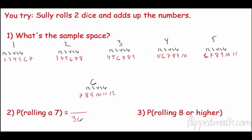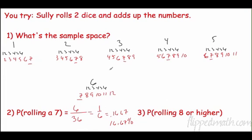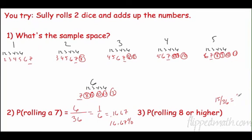What is the probability of rolling a sum of seven? Counting the outcomes that total seven: there are six of them. So six out of 36 reduces to one out of six — 0.1667, or 16.67%. For rolling an eight or higher, counting those outcomes gives 15 out of 36, which reduces to five over 12 — 0.4167, or 41.67%.